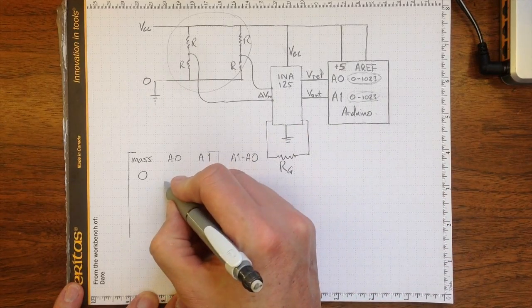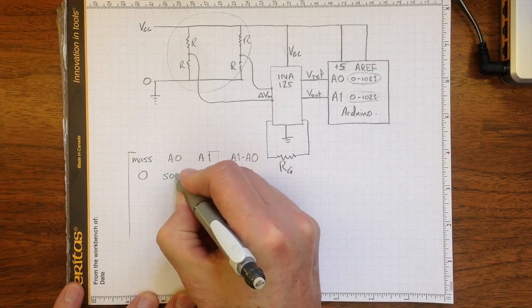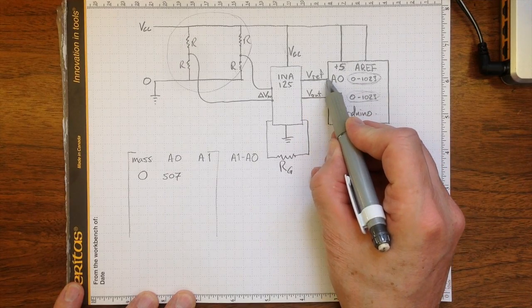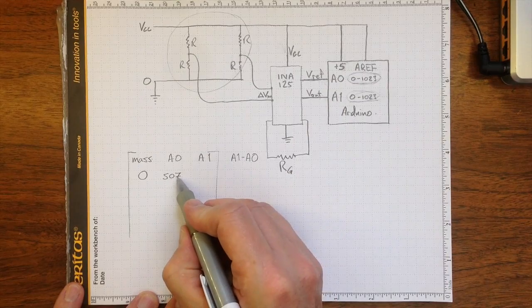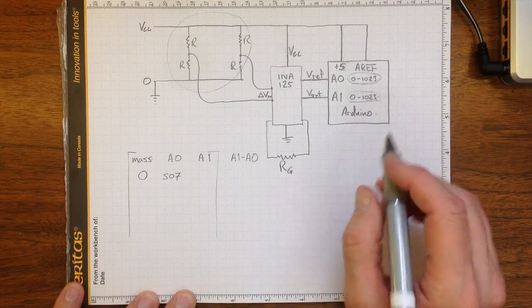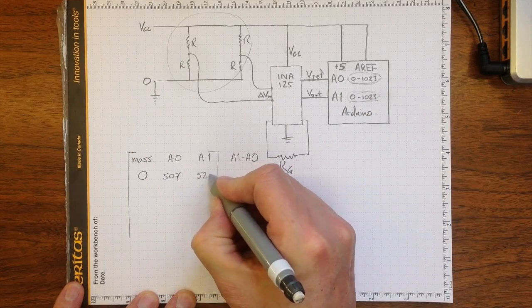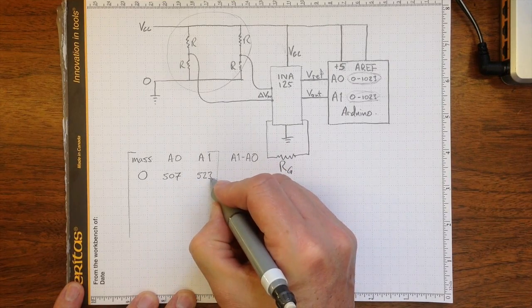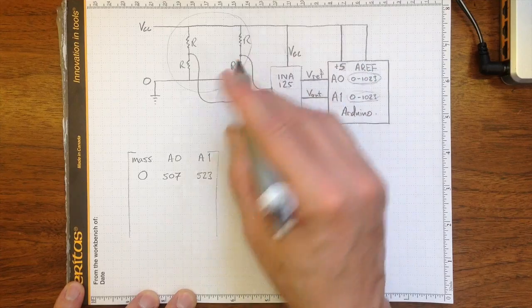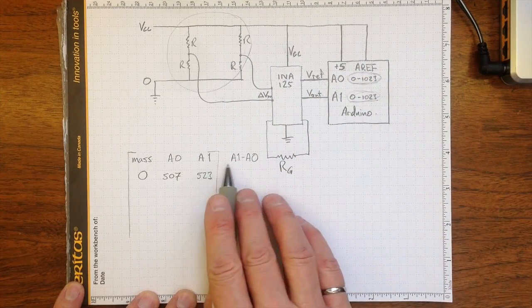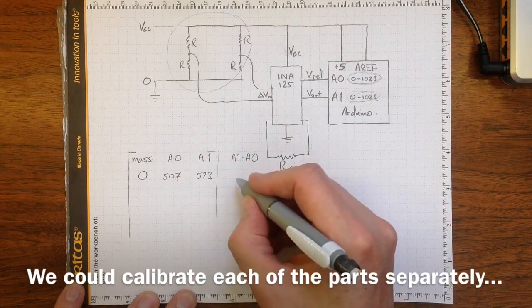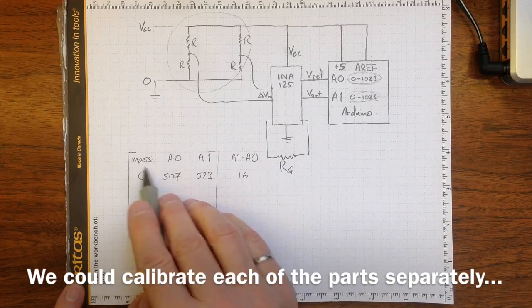So A0 might be 507. That's the reading that we get by comparing the reference voltage of about 2.5 volts to plus 5. It's about halfway in between. And we measure the output voltage. Converted to a digital value, we might wind up with 523. It could just as easily be lower than the A0 value. This is the offset, the imbalance in the bridge, the differences in these resistors when there's no load applied to the beam. So we find that A1 minus A0, 523 minus 507, is 16 when the mass is equal to 0.